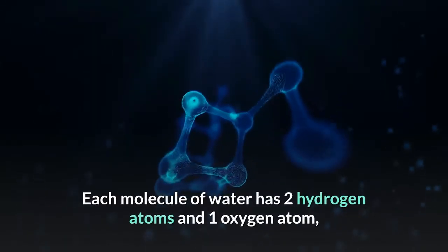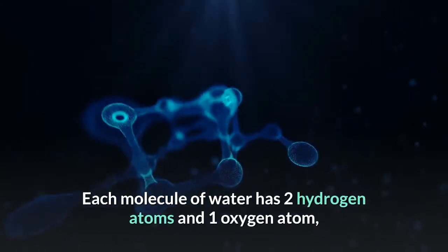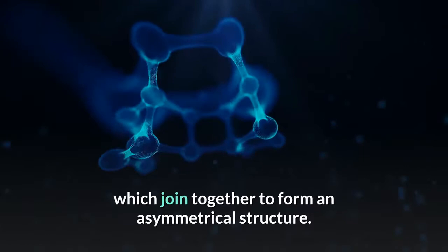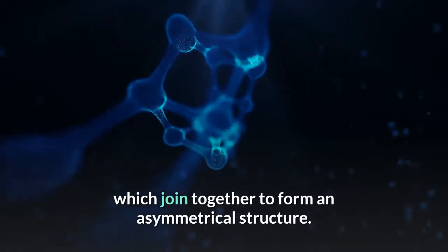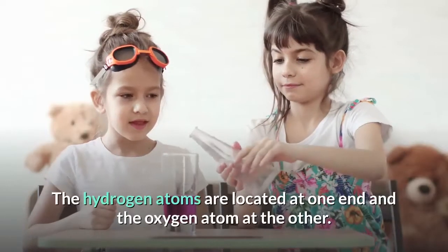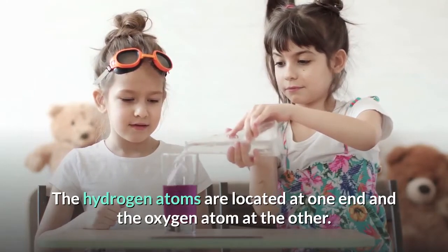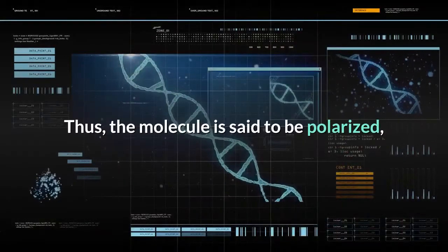Each molecule of water has two hydrogen atoms and one oxygen atom which join together to form an asymmetrical structure. The hydrogen atoms are located at one end and the oxygen atom at the other, thus the molecule is said to be polarized.